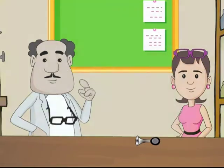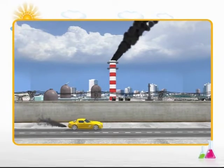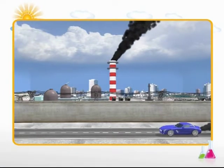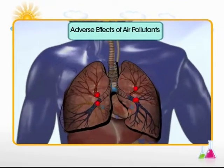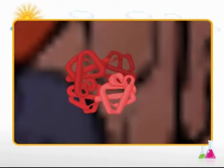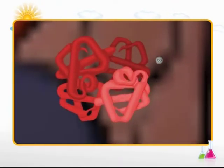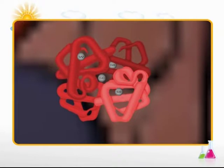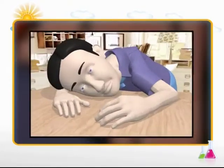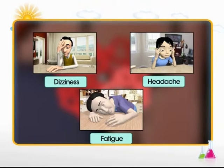Now that we have learned about air pollutants, let us learn about the adverse effects that these pollutants have on us. Carbon monoxide, when inhaled, binds to the hemoglobin in the blood and forms a compound called carboxyhemoglobin. This compound severely hampers the transport of oxygen by blood to the various body parts. Low concentration of carbon monoxide in blood can result in dizziness, headache, and fatigue. High concentration, however, is fatal and may lead to death.